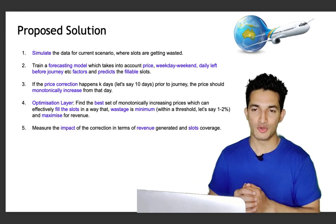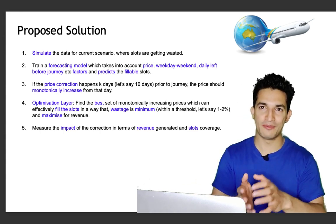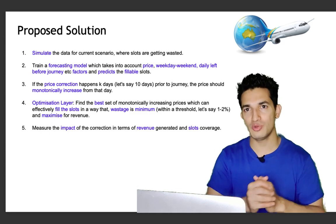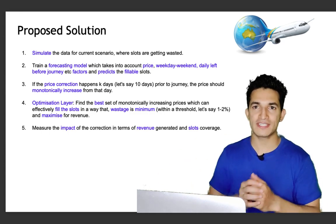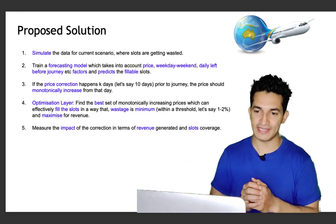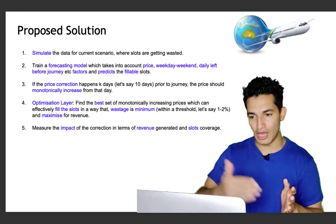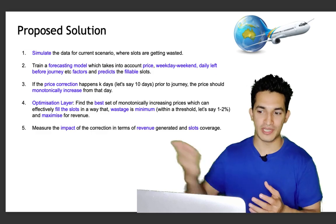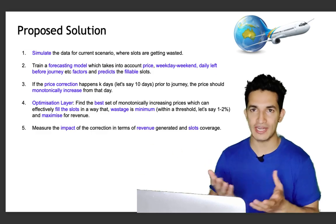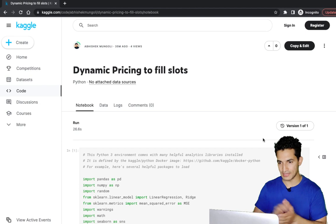We will then measure the impact of this correction in terms of revenue as well as slots coverage, so it will benefit both the provider by getting more revenue and the consumer by getting seats at affordable prices. Now we will look at the Kaggle notebook — how we solved it and what the gain is in terms of revenue and slots. I will make this Kaggle notebook link available in the description section.